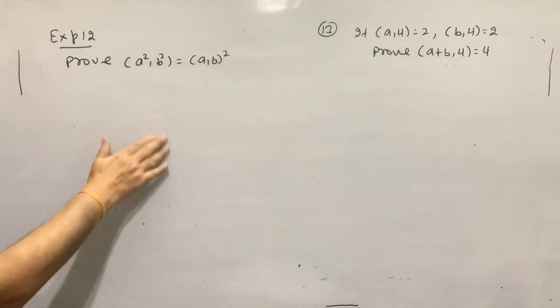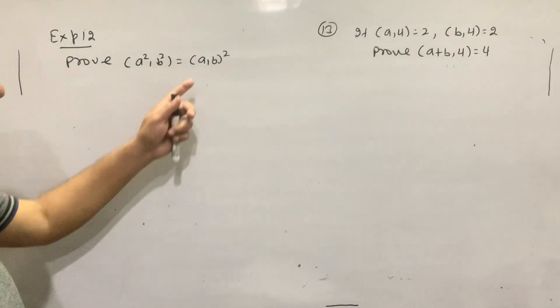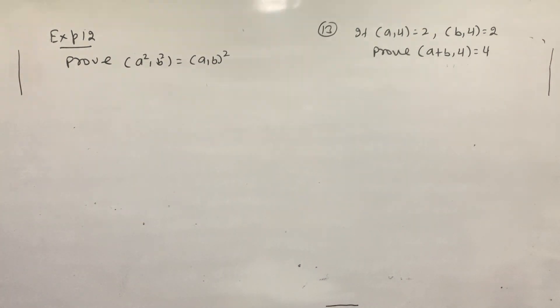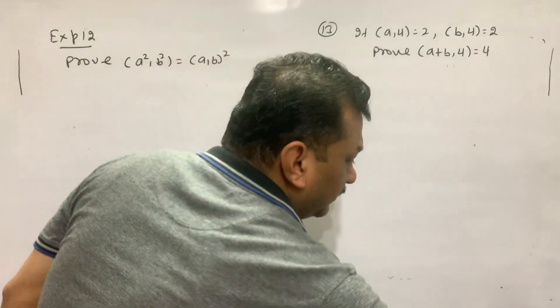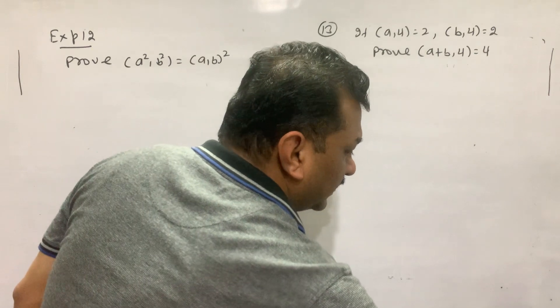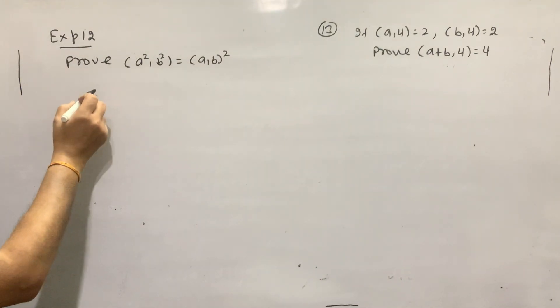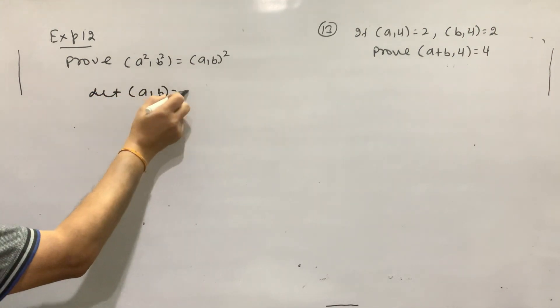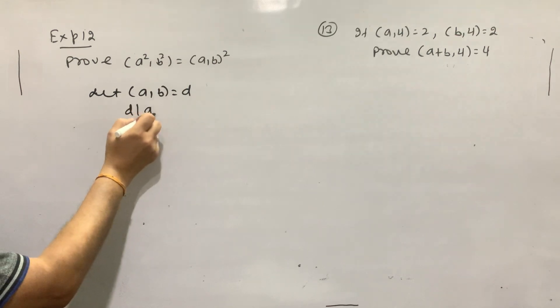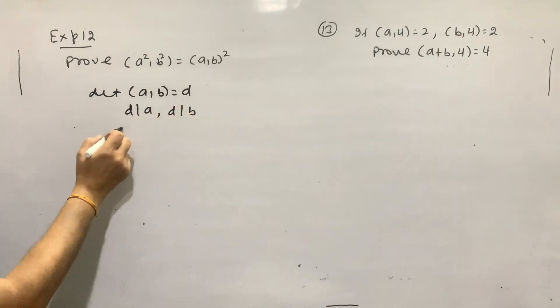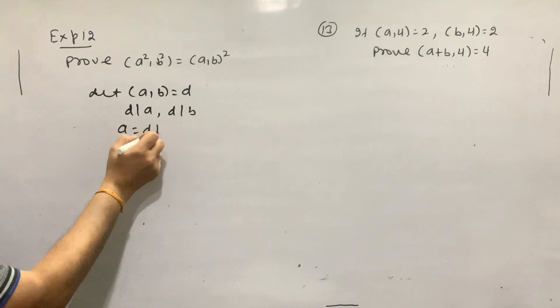Prove that A scale and B scale... Let's look at this. Let's look at the left A and B. D divide A, D divide B. Then A is equal to D times K1.